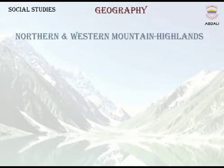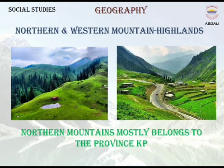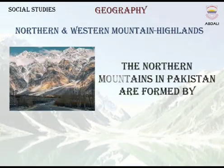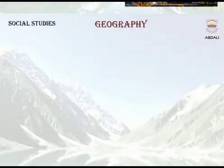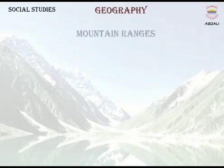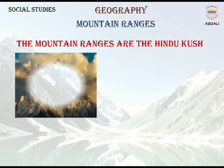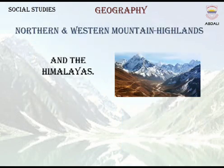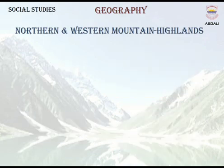Northern and Western Mountains Highlands. In Pakistan, the northern mountains mostly belong to the province of KP. The northern mountains in Pakistan are formed by mountain ranges and glaciers. The mountain ranges are the Hindu Kush, the Karakoram, and the Himalayas. Many of the highest mountains in the world are in the highlands of Pakistan.